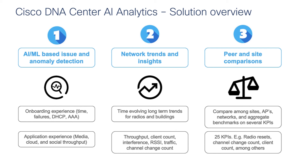Cisco DNA Center uses dynamic baselines to generate issues for onboarding and application experience for cloud and media applications. It provides insights into deviations for key KPIs like radio throughput, client count, and interference on an access point or building, and enables comparison between sites for KPIs such as channel change counts, radio resets, and interference. This allows an engineer to compare, for example, a building with newer updated software to one with older software, and even compare your network against a peer network. In the next video, you can see a demo of some of these features.